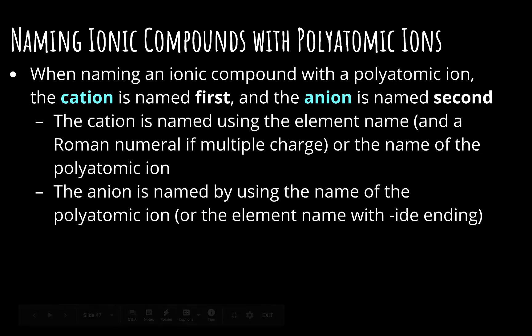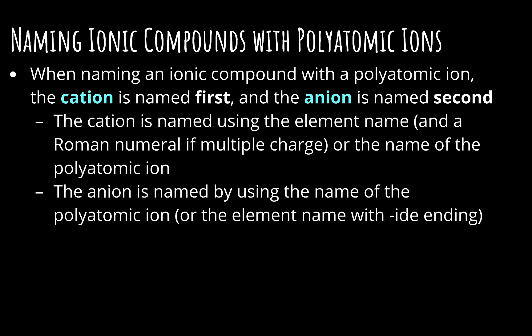When you name an ionic compound that has a polyatomic ion, the cation is named first and the anion is named second. The cation is named using either the element name — including a Roman numeral if it's a multiple charge metal — or the name of the polyatomic ion. The anion is named using the name of the polyatomic ion or the element name with an -ide ending.